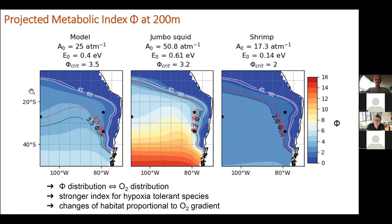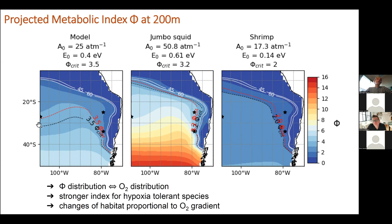Looking at phi_crit: there is a stronger change of habitat for the model species compared to the squid, with a very tight phi_crit, and the shrimp. The reason is that close to the OMZ domain the gradient in phi is very strong, so there is a weak change in the metabolic index and in habitat. The further you get from the OMZ — starting with the shrimp and especially the model species — there is a weaker gradient in phi, so a stronger change in habitat. Changes of habitat are therefore proportional to the metabolic index gradient and to the oxygen gradient.